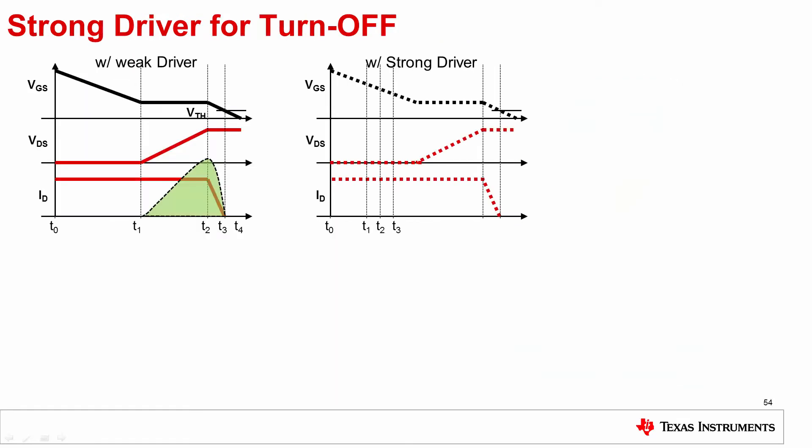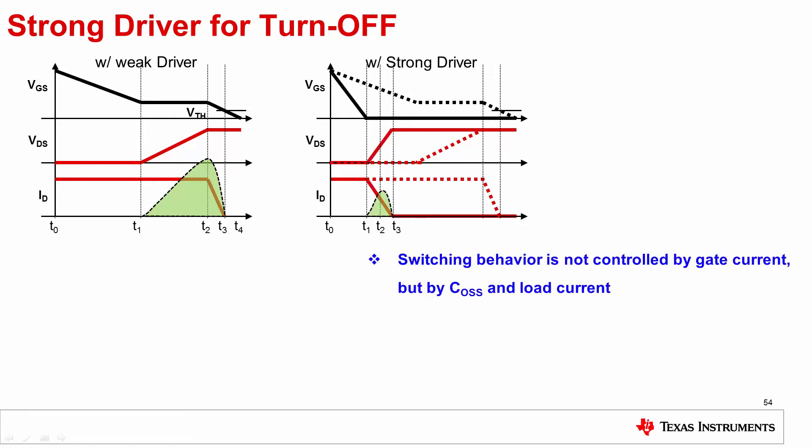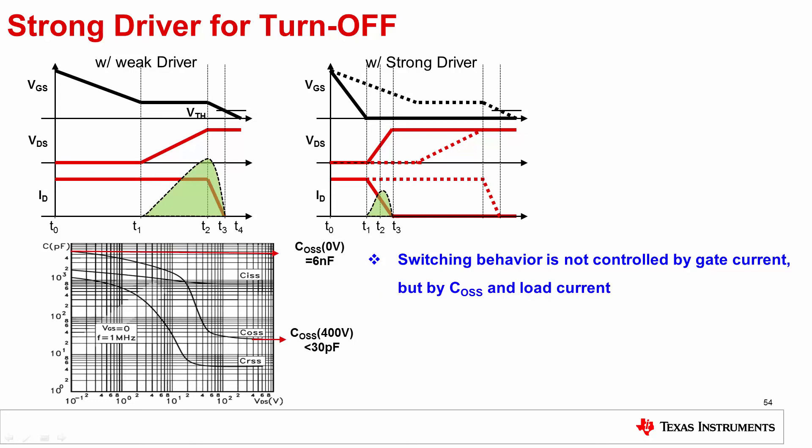Soft switching solves the turn-on loss. However, the turn-off is still hard switching. Like the critical conduction mode, the turn-off current is doubled. The switching loss will surely increase if driving the FET with a weak driver — meaning lower sink current capability. With a strong gate driver, you will hardly see the Miller plateau area and the overlap period is minimized. Importantly, the switching behavior is not controlled by the gate current, but by the COSS and the load current.